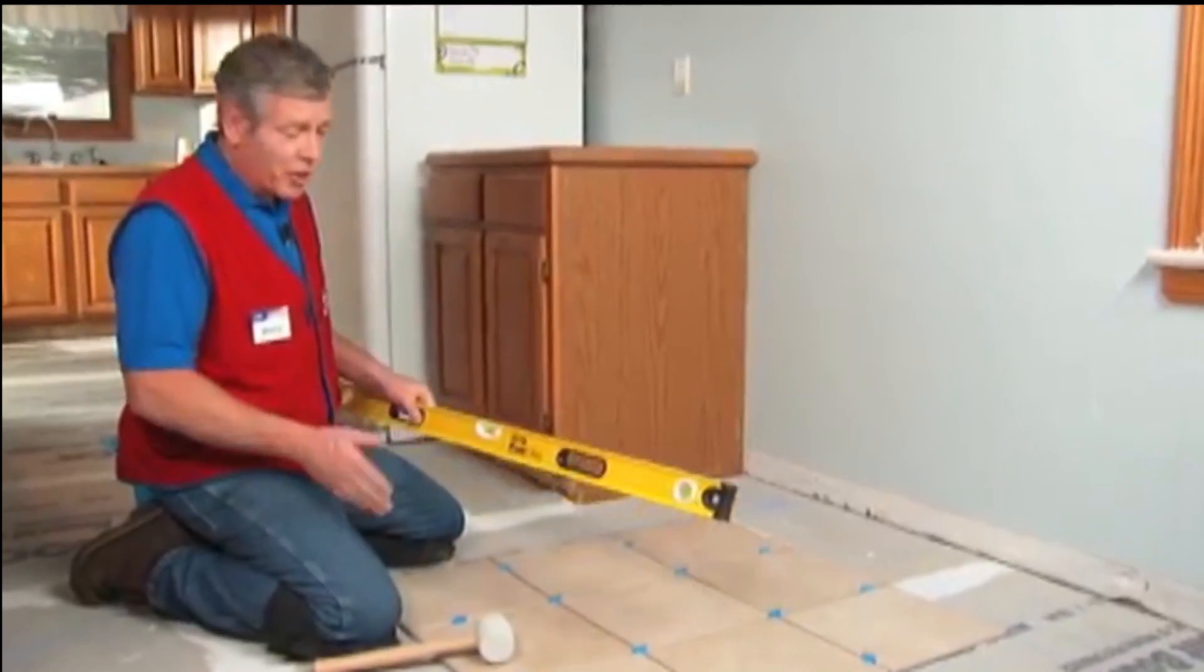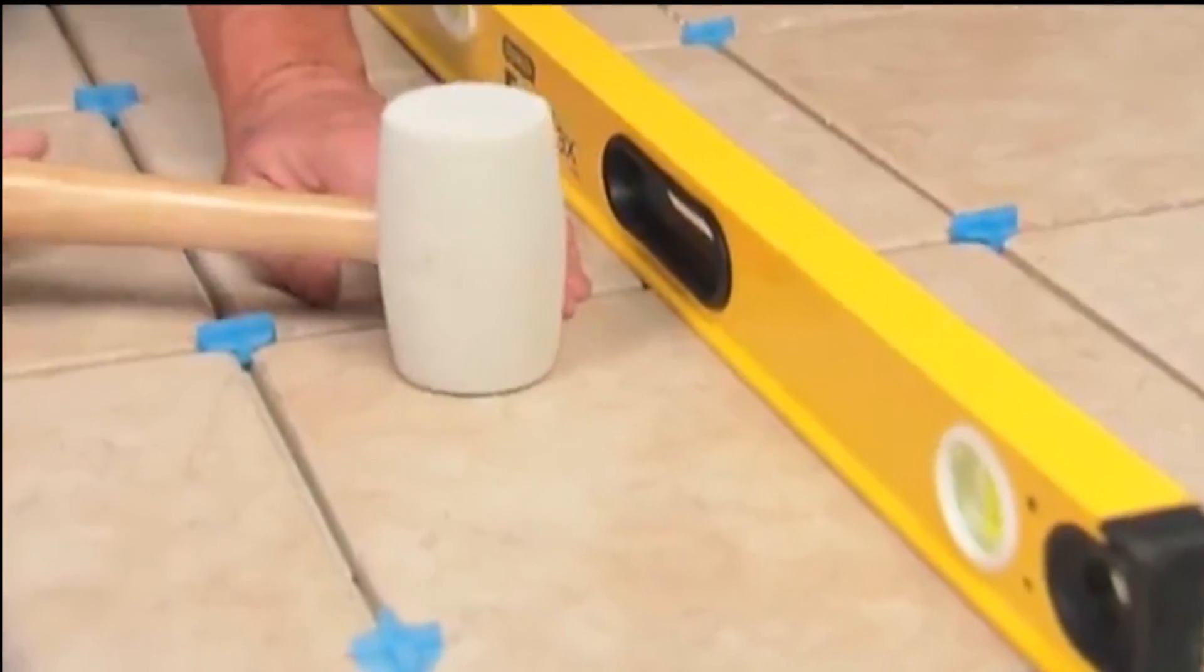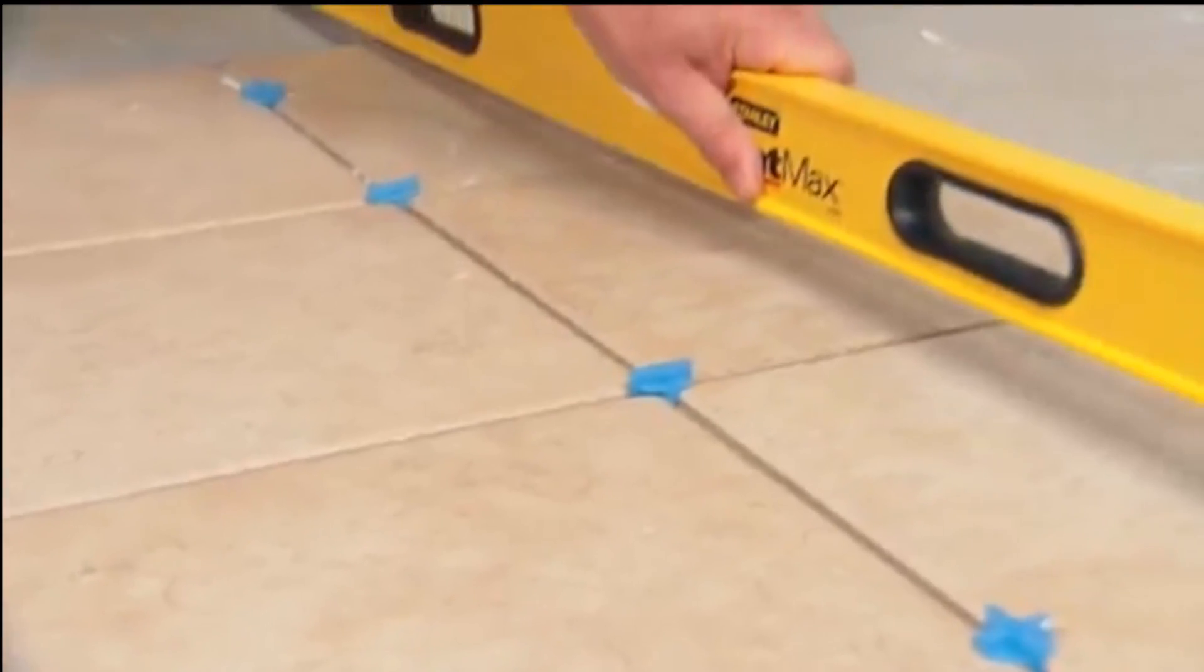Once a few of your tiles are set, check for any high spots using a level. Even them out using a rubber mallet. Then keep checking as you cover the room.